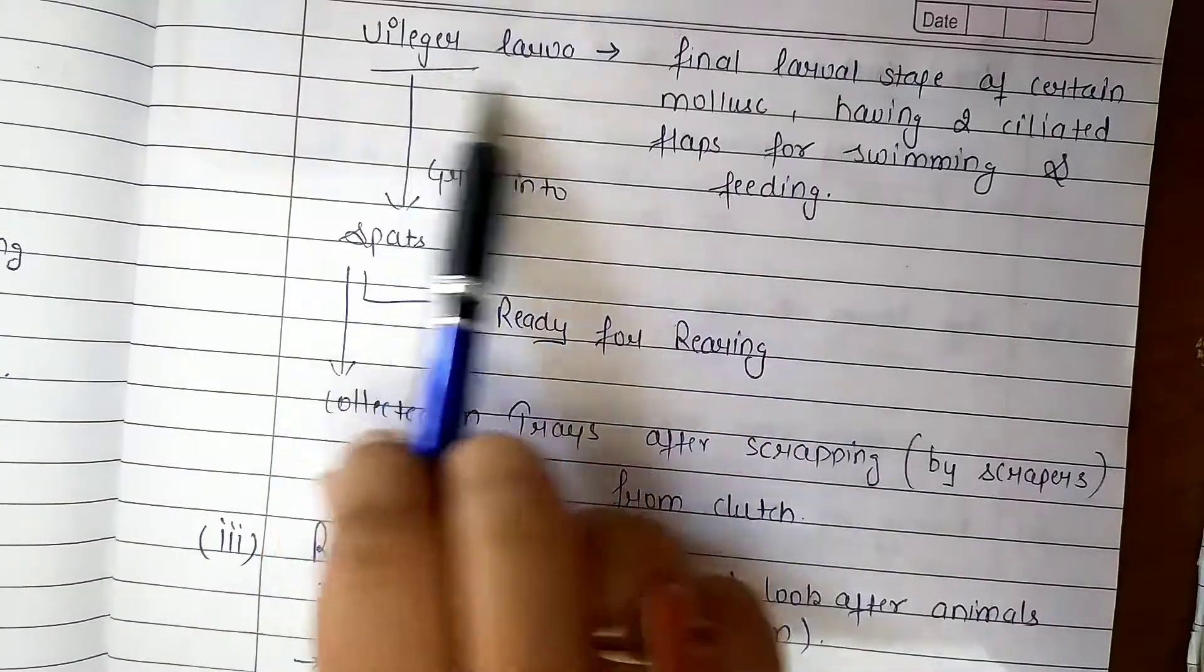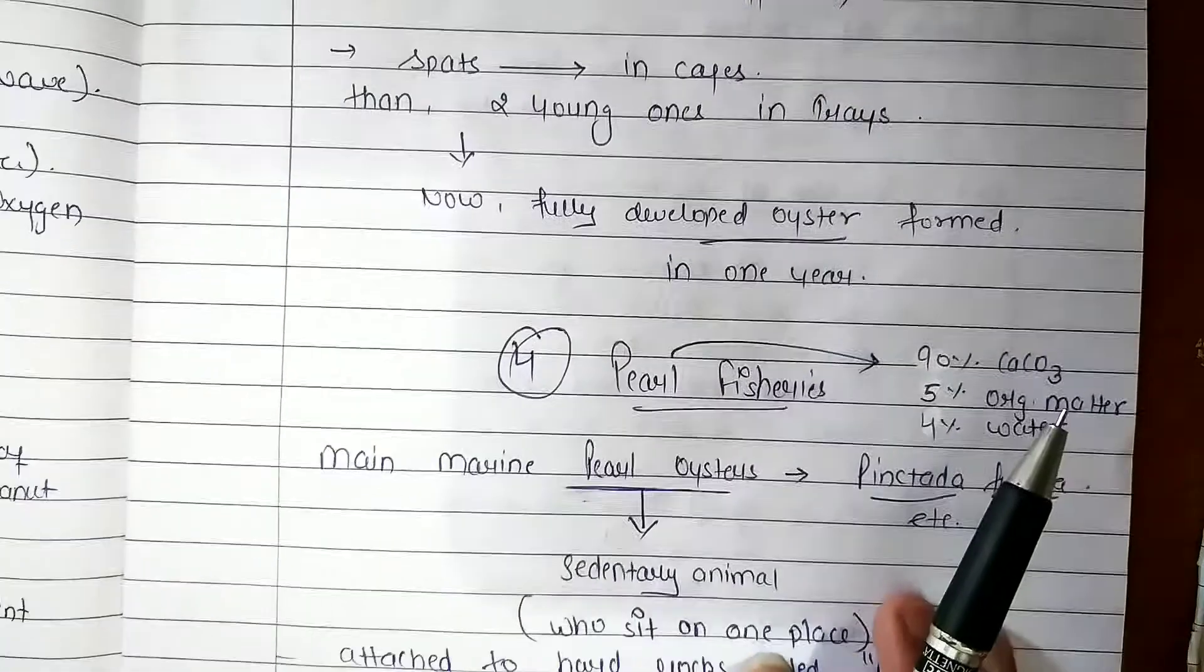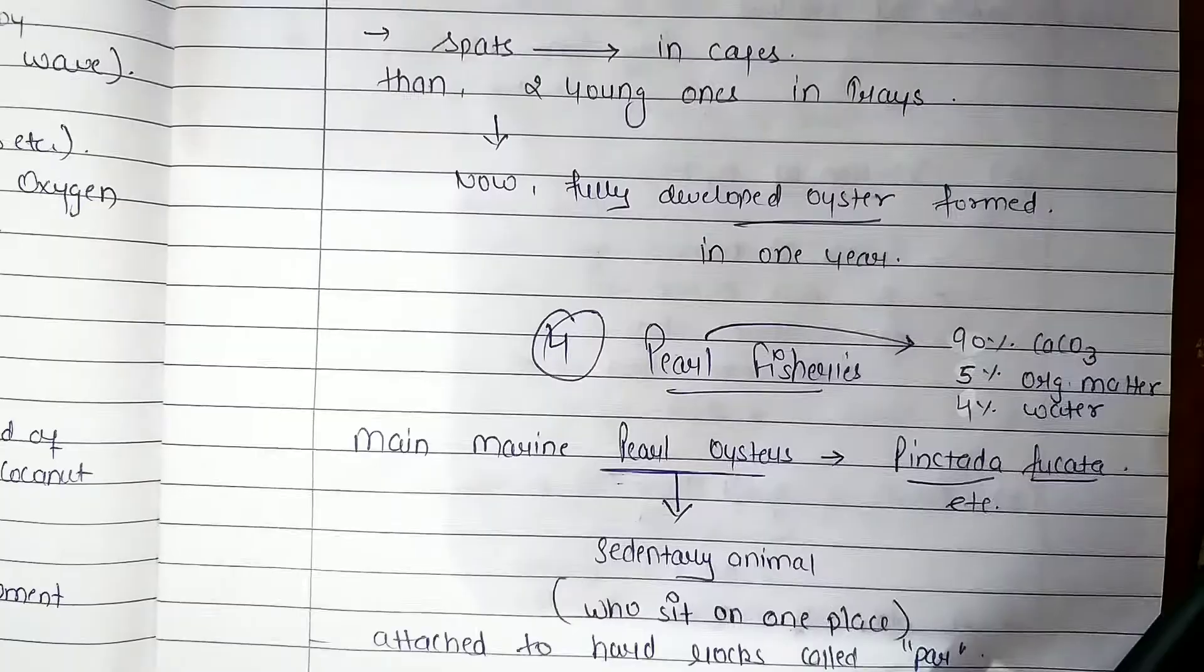The young ones are spats. They are small. We have two slated flaps for swimming and feeding. Then fourth is our last culture.